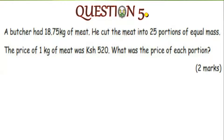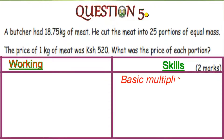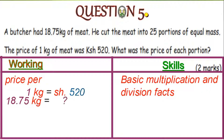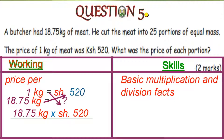Question five: a butcher had 18.75 kg of meat, cut into 25 portions of equal mass. The price of 1 kg of meat was 520 Kenya shillings. What was the price of each portion? The skill is multiplication and division. Price per 1 kg is 520 shillings, so 18.75 kg will cost 18.75 × 520 ÷ 1.